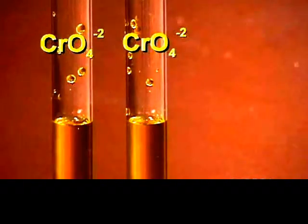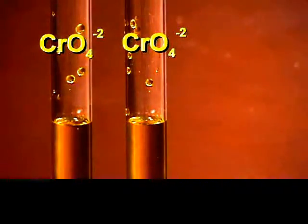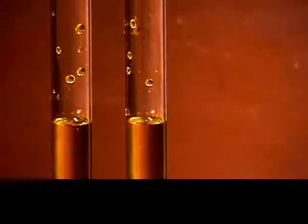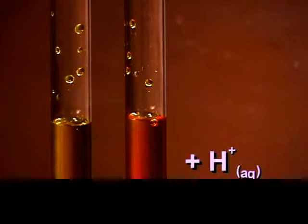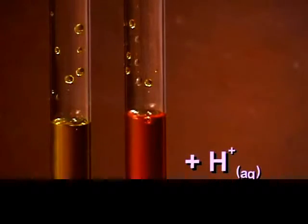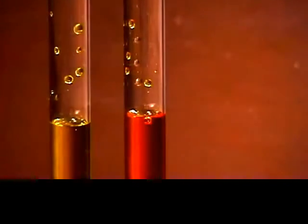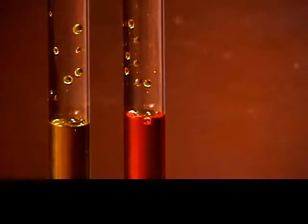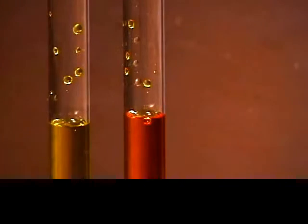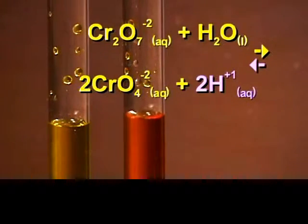We have two test tubes containing a solution of potassium chromate. We will add 6 molar nitric acid to one of the tubes. We notice that the solution turns orange, which indicates that the reaction has shifted in the reverse direction from the chromate to the dichromate.